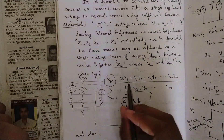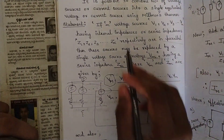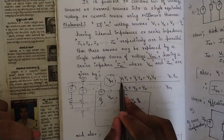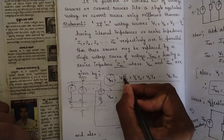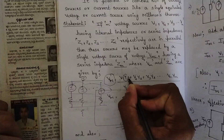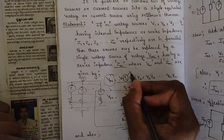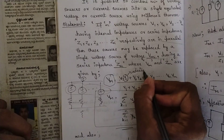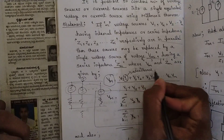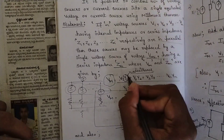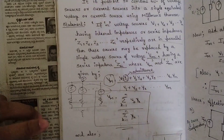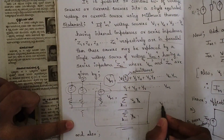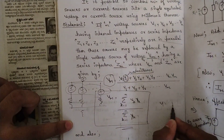Let us now discuss the formula. Vm, the equivalent voltage source, has the formula: V1·Y1 + V2·Y2 + ... + Vn·Yn, all divided by Y1 + Y2 + ... + Yn. Here Y is the admittance. What is Y1? If someone is wondering, Y is the admittance term.